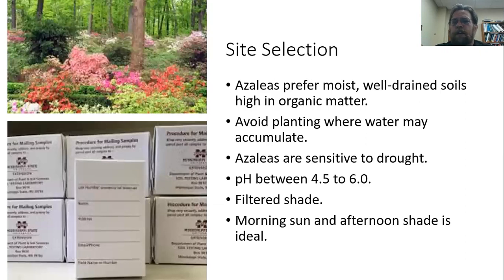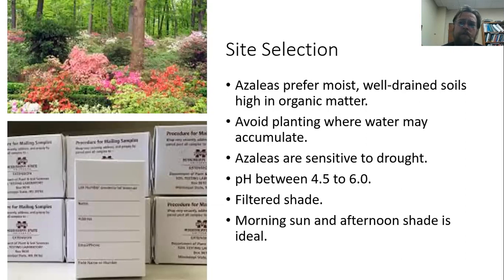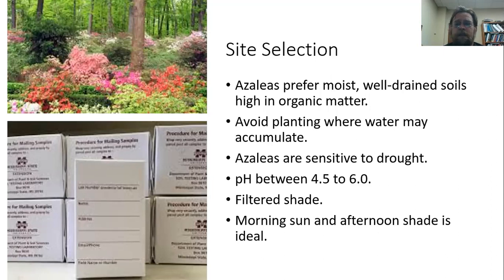When planting azaleas, we want to make sure we're planting them in a space where they'll be happy. They prefer moist, well-drained soils high in organic matter. Like many landscape plants, they don't like wet feet, so avoid areas where water accumulates. If you have drainage problems, there's no reason not to go with a raised bed, which will give better drainage and the plants will do a lot better. Do keep in mind that even though we want to avoid wet feet, azaleas can be fairly sensitive to drought because they tend to be fairly shallow rooted, so supplemental water may be needed during dry stretches in summer heat.